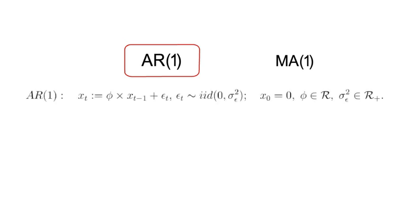where x zero and phi and sigma square epsilon are known real constants. It's good practice to let the starting value coincide with the unconditional mean. Here, x zero equals zero.